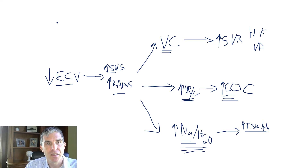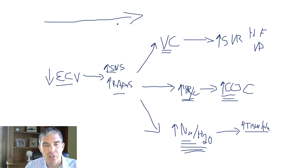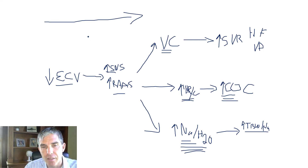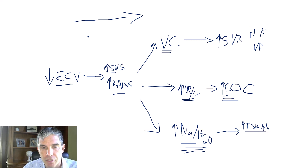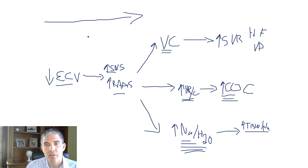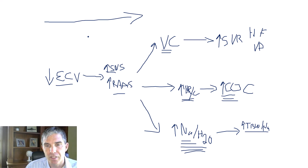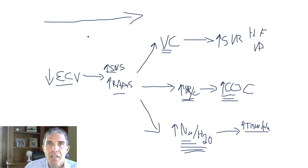Summarized on this slide is everything you need to know about the body's response to low ECV. It explains the physiology behind three very common conditions: volume depletion, heart failure, and cirrhosis. If you understand this, there are lots of questions you can answer on your Step 1 exam about what's going on in patients with these common disease states. That concludes our rapid physiology review.